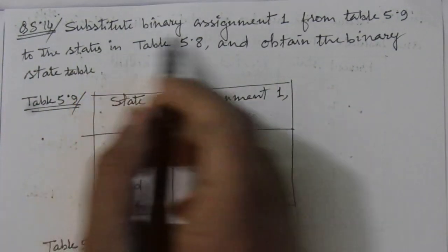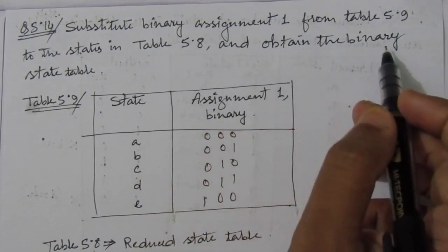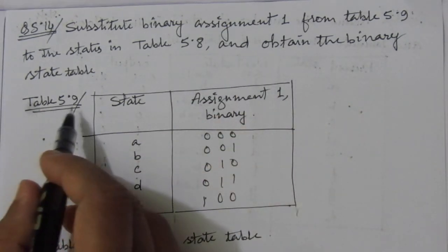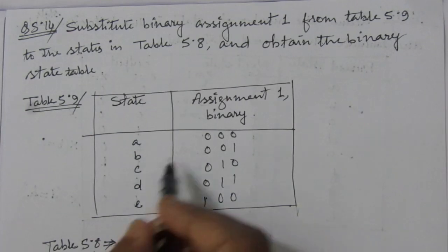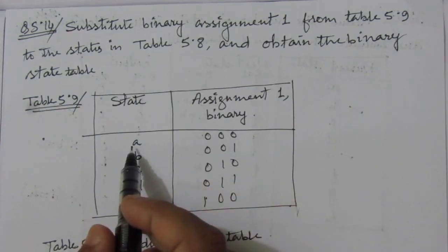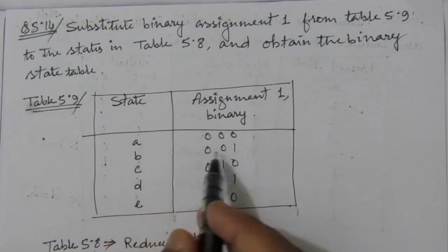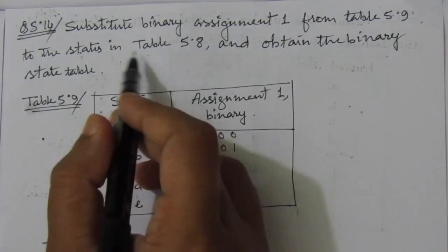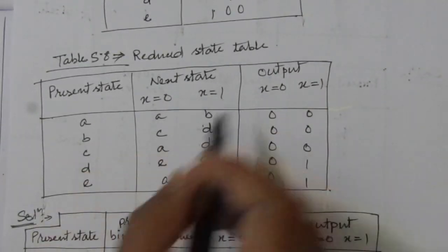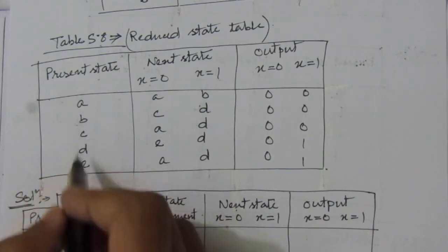The problem is to substitute binary assignment 1 from table 5.9 to the states in table 5.8, and then we have to obtain the binary state table. In table 5.9, we are given with states A, B, C, D, E and their respective binary assignments. Whenever we have a state A and need to replace it with binary, we use the respective binary code. For B, similarly 0, 0, 1, and so on. We have to use these binary assignments for the states in table 5.8, which is a reduced state table.